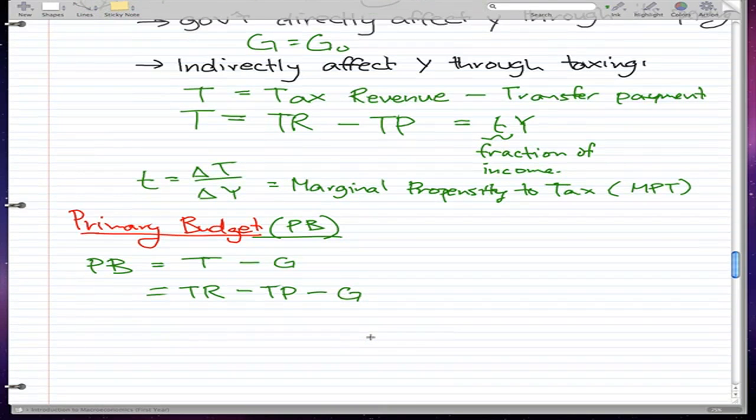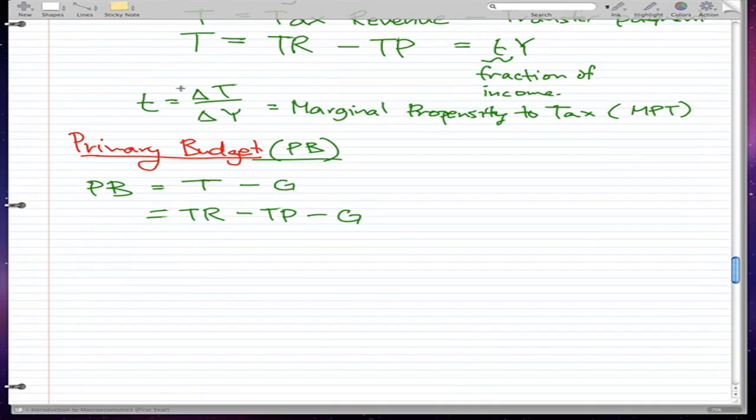The primary budget is what the government collects minus all the work they have to do to collect taxes from millions of people, minus what the government spends for services for their citizens. That's how we get the primary budget.